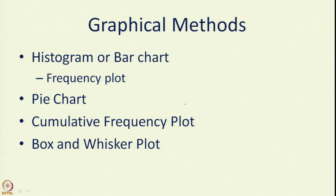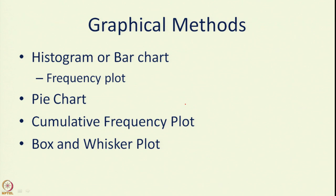Now we move on to graphical methods. We will cover mainly four kinds: histogram or bar chart, also known as frequency plot; pie chart; cumulative frequency plot; and finally box and whisker plot. Histograms and pie charts are commonly seen in newspapers and general literature, cumulative frequency plots appear frequently in financial matters, and box and whisker plots are very commonly used in scientific data representation.